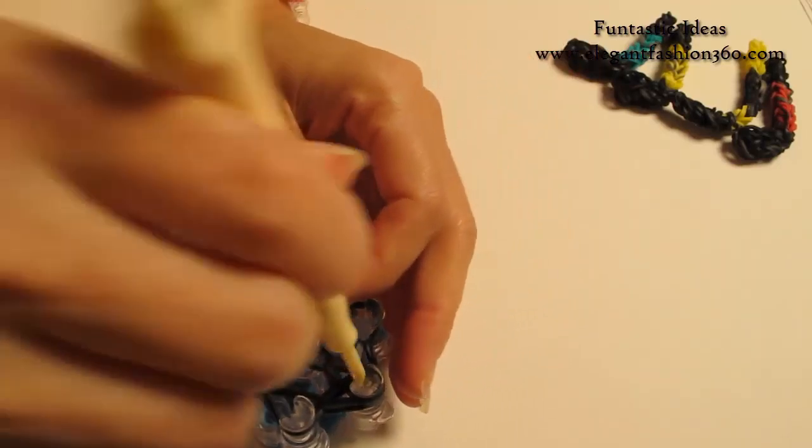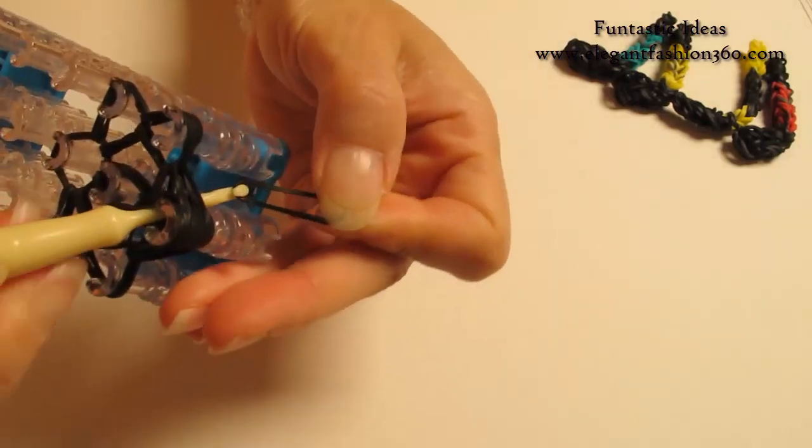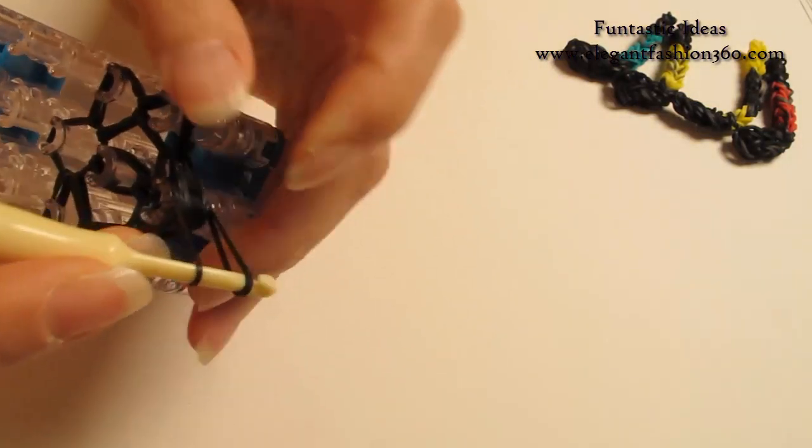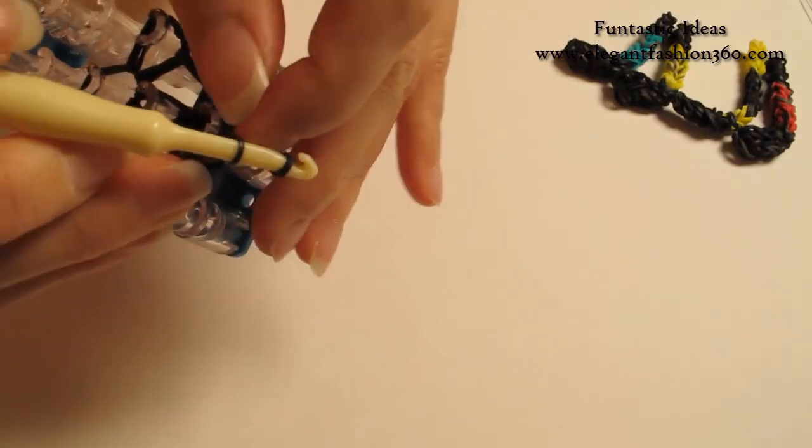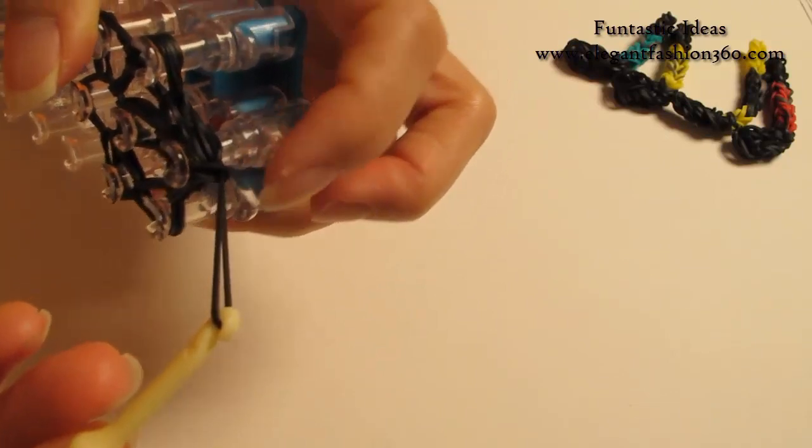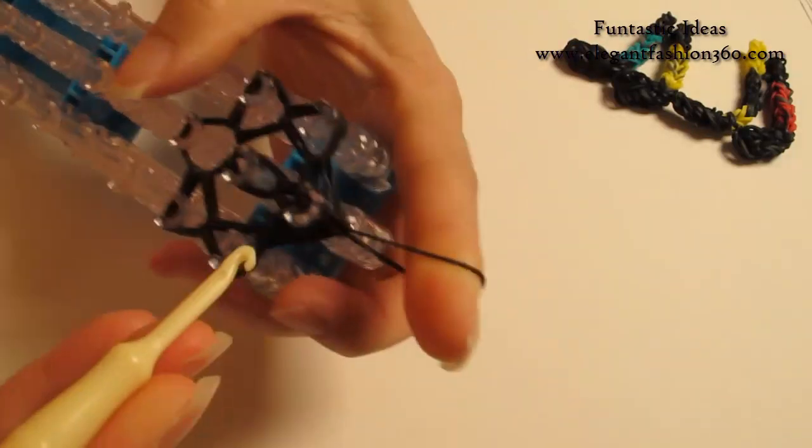Now we're going to take one single band and grab it through here. Hook both ends on your hook, grab one end through the others and tie a knot here. Now it's time to pull it off.